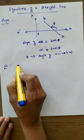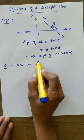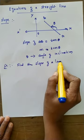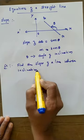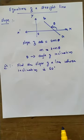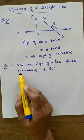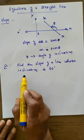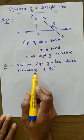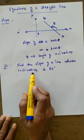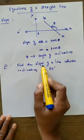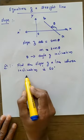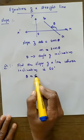It is called the angle of inclination. For example: find the slope of a line whose inclination is 60 degrees. Inclination means it is the angle of inclination, which is the angle θ. Here, θ is given as 60 degrees.